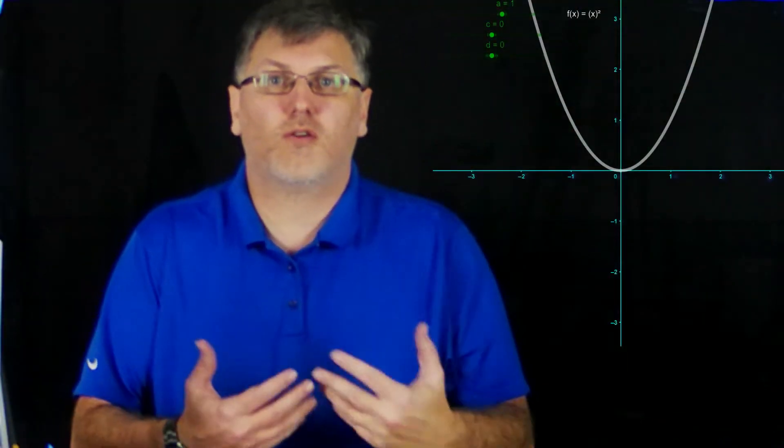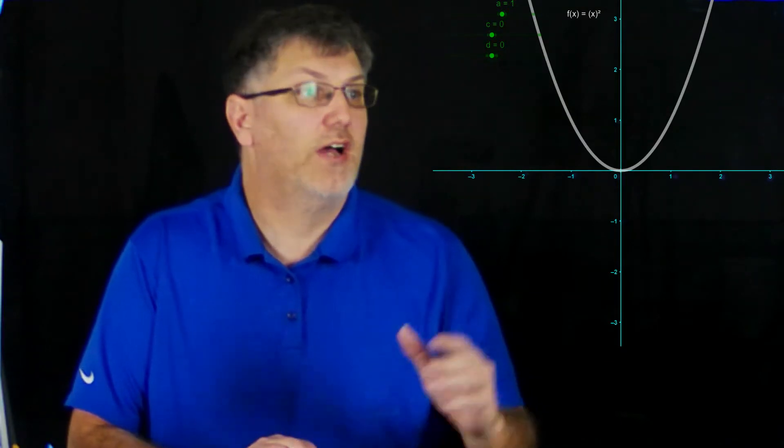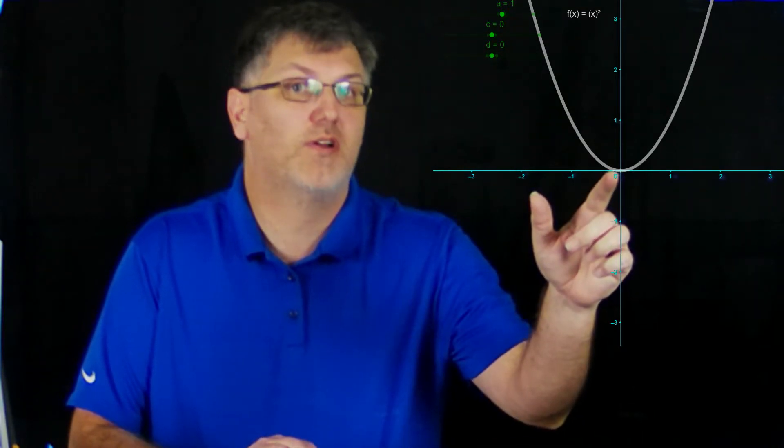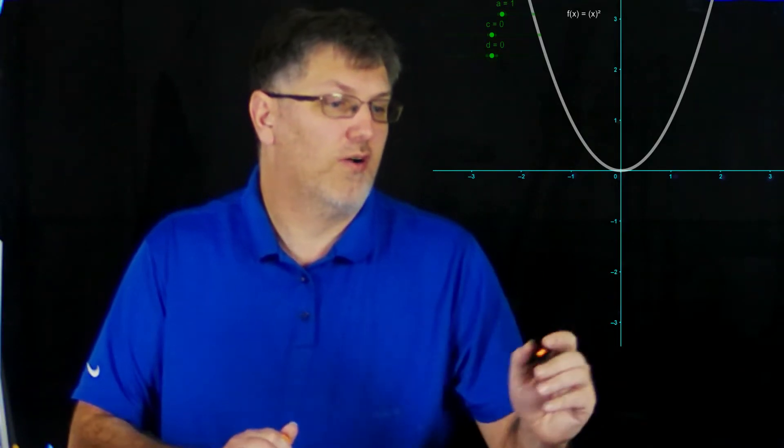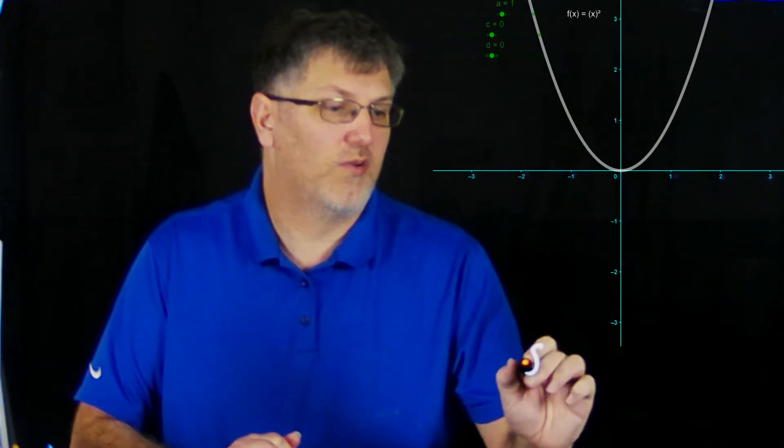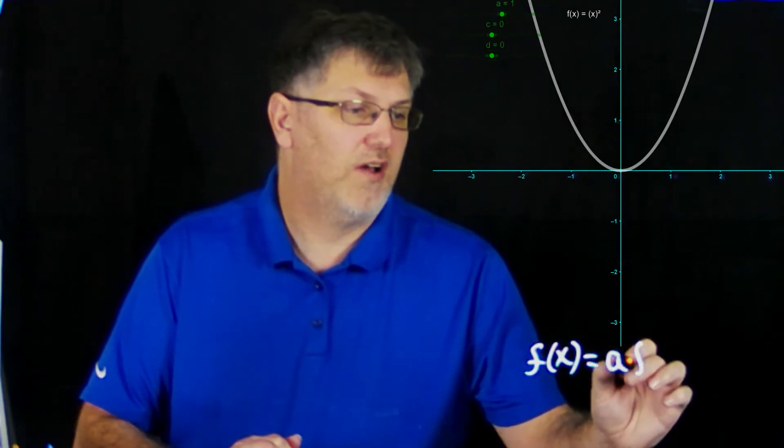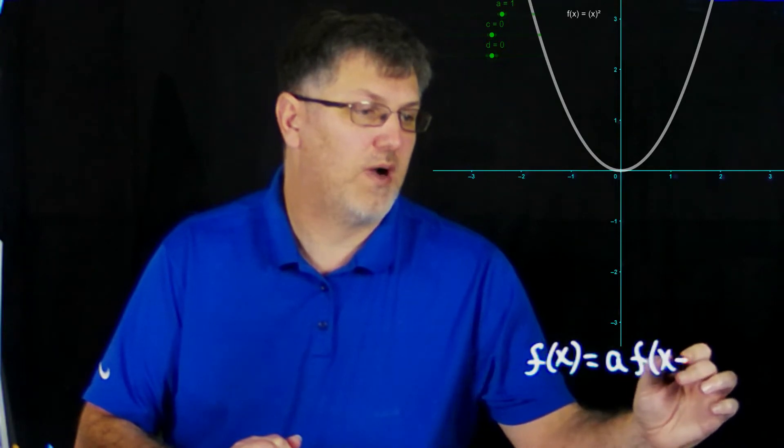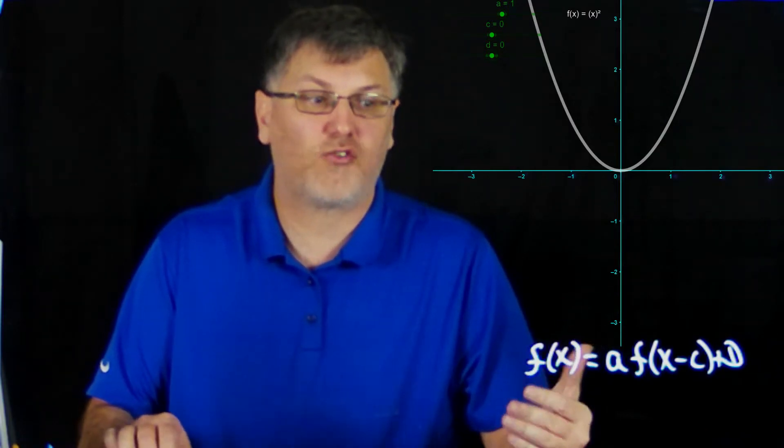Alright, so we're going to go ahead and do transformations with a quadratic or parabola. As you can see right here, I have a parabola. It's the parent function at the origin, which is (0,0) right here. I'm going to be able to move this left and right, up and down. We have our basic function, which is going to be f(x) = a*f(x-c) + d. We're going to look and see how each one of these affects the actual graph itself.